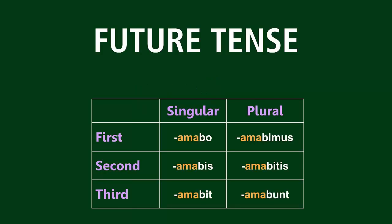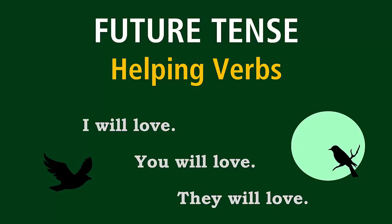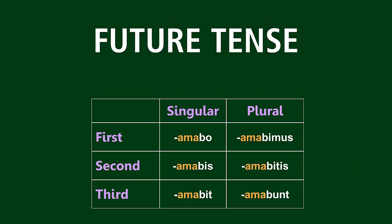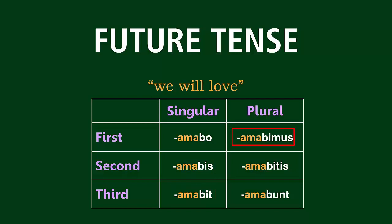So you can conjugate a verb in the future tense — but how do you translate it? How do you talk about events in the future? If you were going to tell me about your plans for next summer, or next year, or ten years from now, what helping verb would you use? Will! That's right, you would use will. So let's go back to our conjugations for amo, amare: amabo — I will love; amabis — you will love; amabit — he, she, or it will love; amabimus — we will love; amabitis — you all will love; amabunt — they will love.